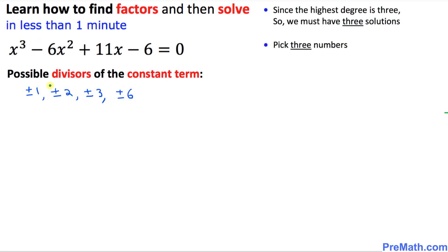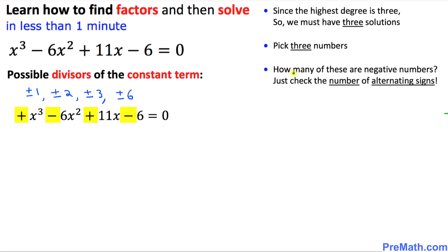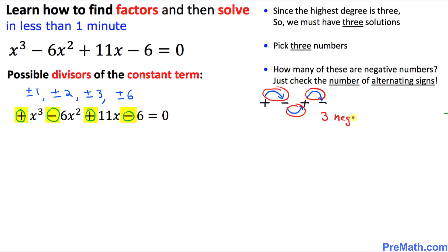That means we are going to pick 3 appropriate numbers among these. Now let's find how many of those 3 numbers are going to be negative. Just look at the signs: positive, negative, positive, negative. We are going to see the fluctuations — the changes. Positive to negative, negative to positive, positive to negative — that gives us 3 fluctuations. That means we are going to have 3 negative solutions.